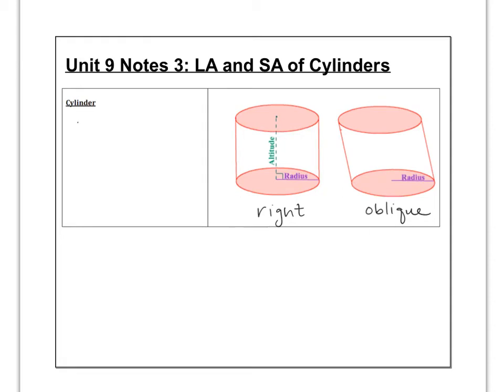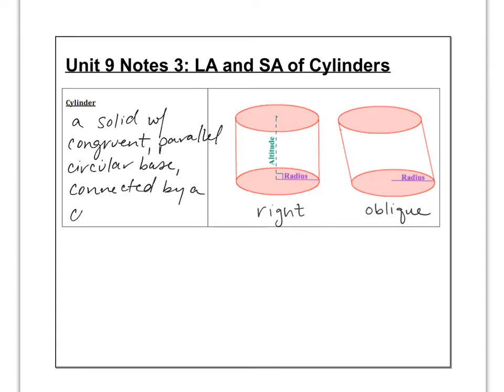Here's the definition of a cylinder. It is a solid with congruent, parallel, circular bases connected by a curved surface. Basically, a can. A can is another way of thinking of a cylinder.